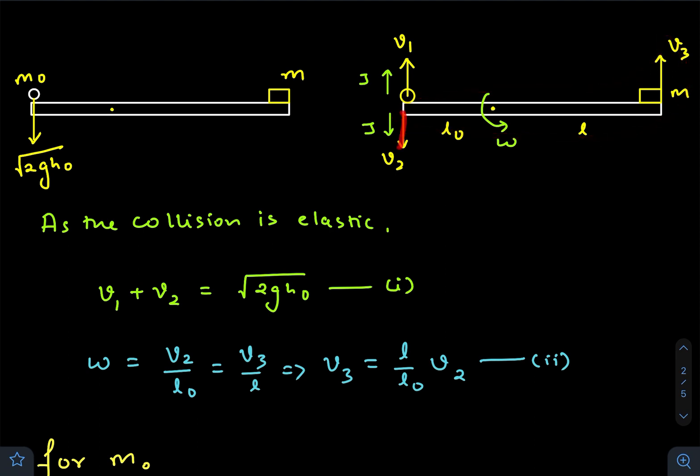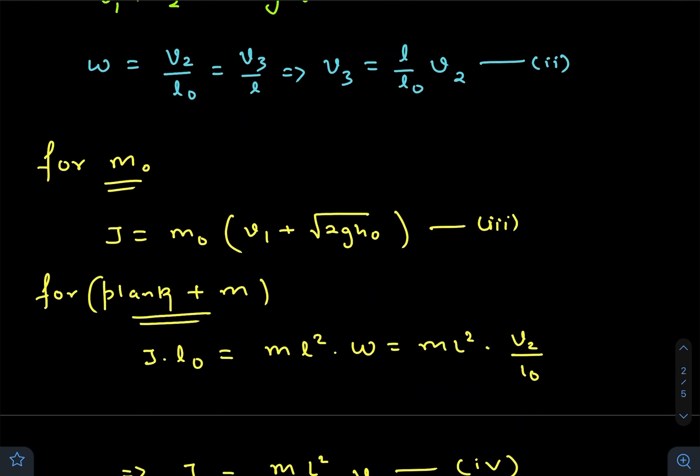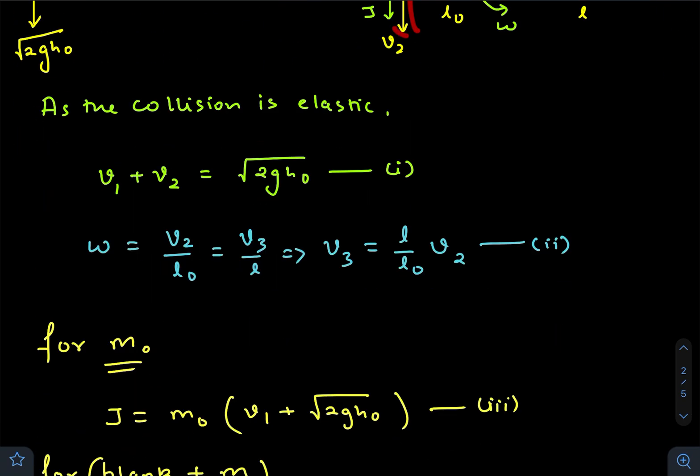there will be an impulsive force which creates an angular impulse in the anti-clockwise direction, resulting in an increase of angular momentum of the whole plank plus block structure. The angular impulse is J·l₀, which equals the moment of inertia. Since the plank is massless, the moment of inertia is only of this block,